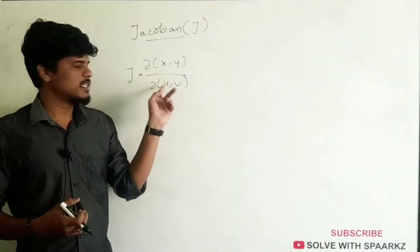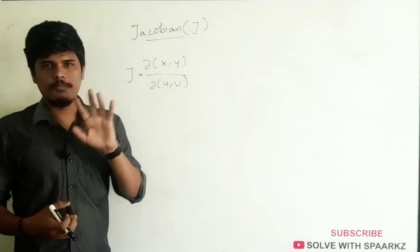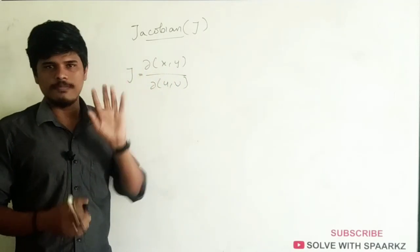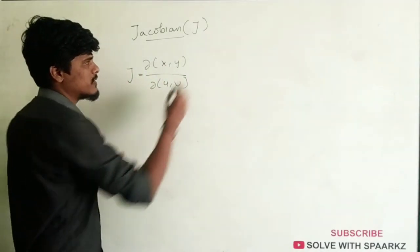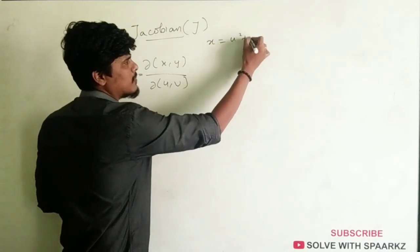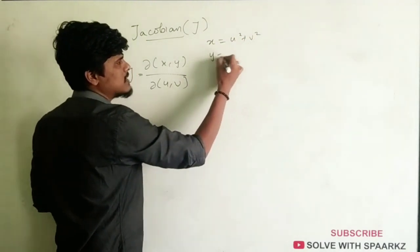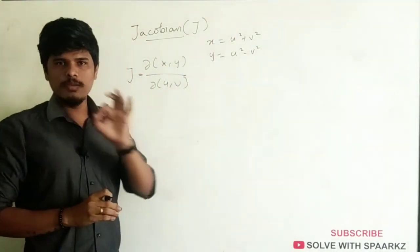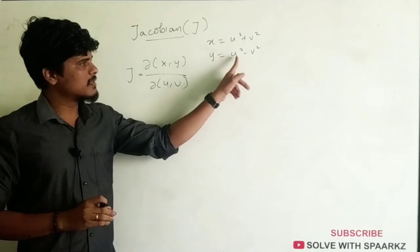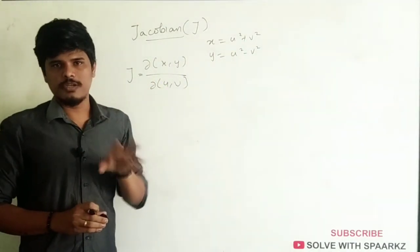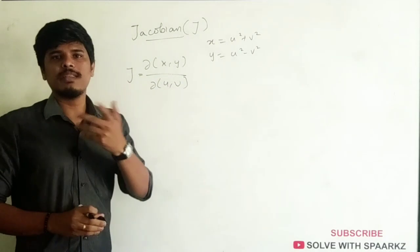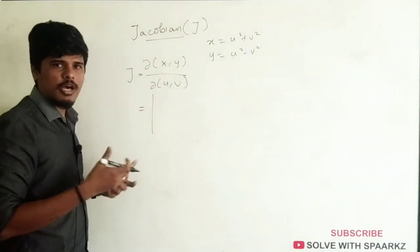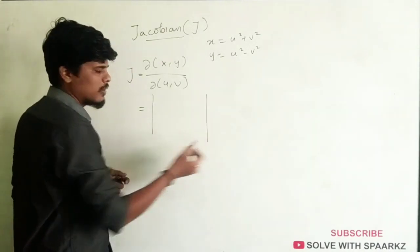So, doh x, y divided by doh u, v is the general form. The meaning is: x and y are functions of u and v. For example, I will ask a question — x is equal to u square plus v square, and y is equal to u square minus v square. So, x and y are functions of u and v. The Jacobian expansion has a 2x2 determinant.